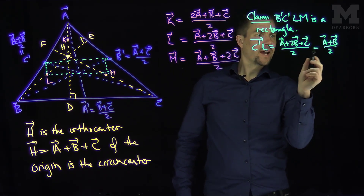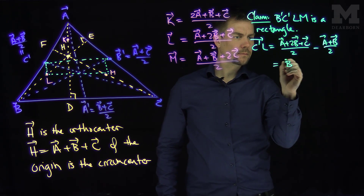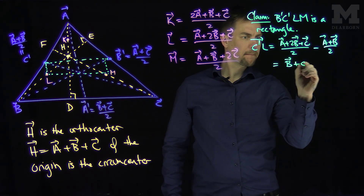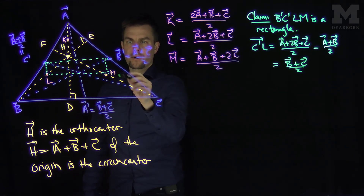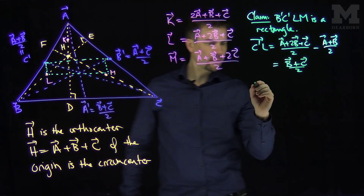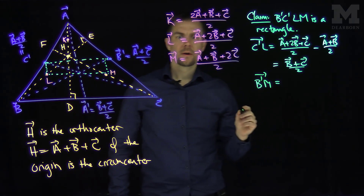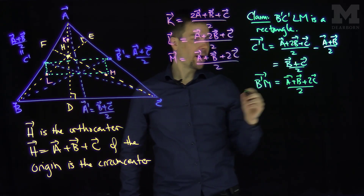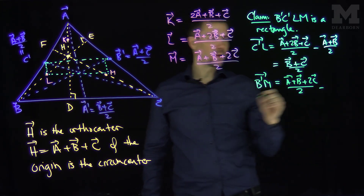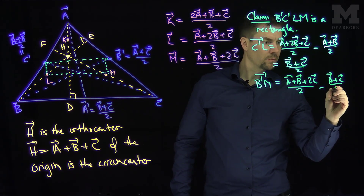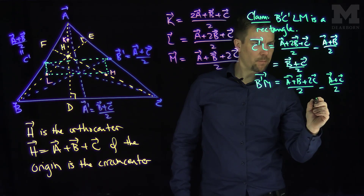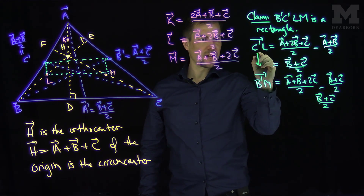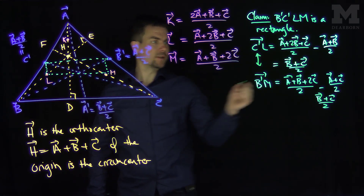And if I look at the vector from B' to M: M is (A + B + 2C) / 2, minus B' which is (A + C) / 2. The A's cancel, giving (B + C) / 2. So these two vectors are equal and therefore parallel to each other. Now I want to check that LM is perpendicular to B'M.